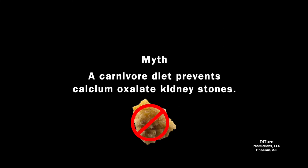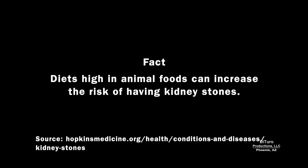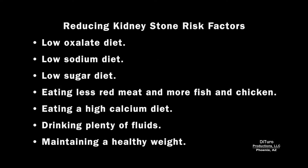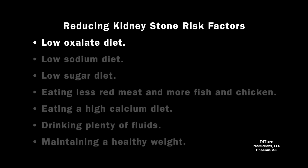Another popular myth about a low oxalate diet is that a carnivore diet prevents calcium oxalate kidney stones. The fact is just the opposite — diets high in animal foods can increase the risk of having kidney stones. Reducing the risk of kidney stones involves a low oxalate, sodium, and sugar diet, eating less red meat and more fish and chicken, eating a high calcium diet, drinking plenty of fluids, and maintaining a healthy weight. Eating a low oxalate diet can reduce your risk, but it does not eliminate your risk.